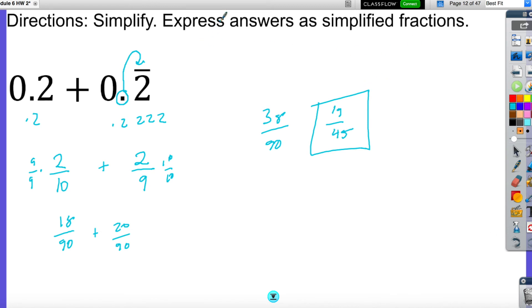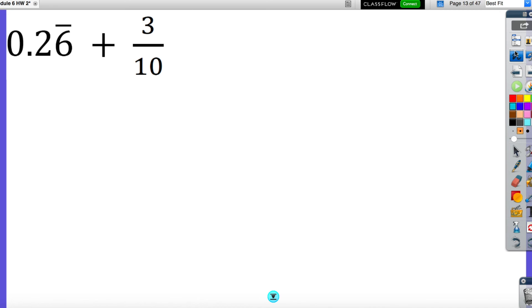I saw other students do this a different way, too, just in case you're wondering. You can add these up, so it would be 0.4 with a 2 repeating. Once it's like this, though, you have to do the method that I showed you on the previous example. So let's go ahead now and look at this one.